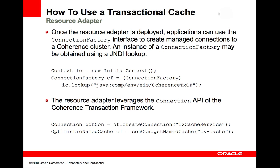In order to use the Coherence resource adapter, it must be deployed to an application server, like Oracle's WebLogic Server. An application may use a JNDI lookup to obtain a connection factory for producing transactional connections, as seen in this example. Once the Coherence connection is obtained, the application can access Coherence using the normal Coherence client APIs.